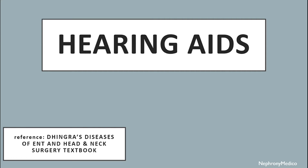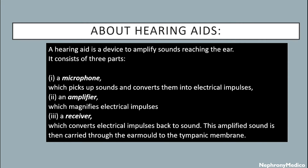Hello and welcome. Let's talk about hearing aids. A hearing aid is a device to amplify sounds reaching the ear. It consists of three parts: a microphone, which picks up sounds and converts them into electrical impulses; an amplifier, which magnifies electrical impulses; and a receiver, which converts electrical impulses back to sound.